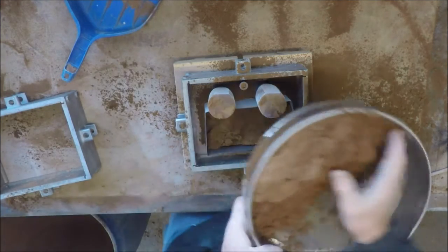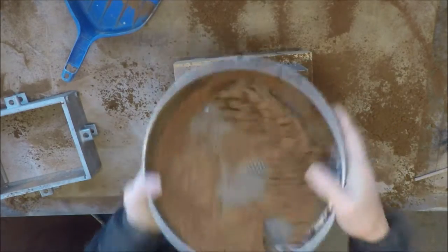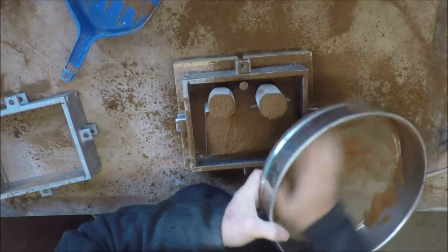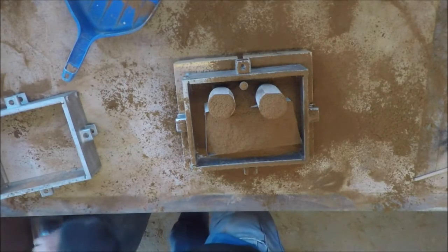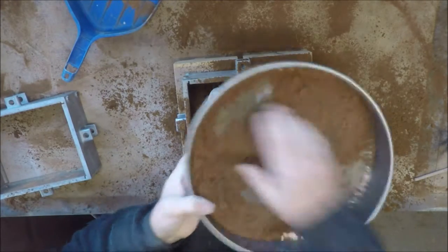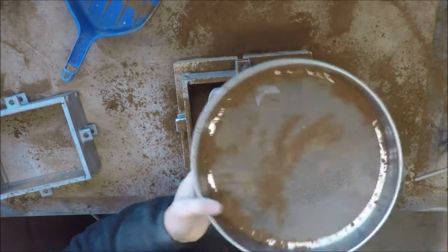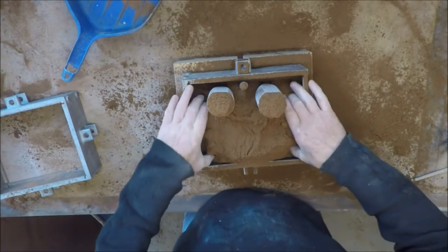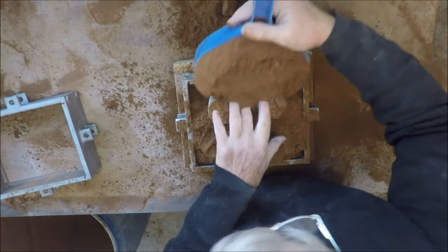Now we sieve on a fair bit of the system sand. Sieved sand always rams a bit better and also you get any bits of rubbish out that might have found their way into your sand, old bits of core, for example. You don't want those anywhere near your actual casting. That should be enough. Now remove that bit. Top up the box completely with sand.